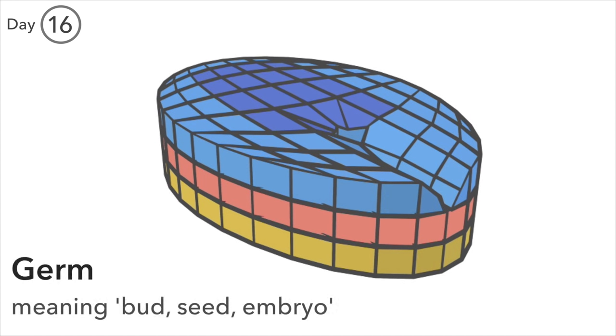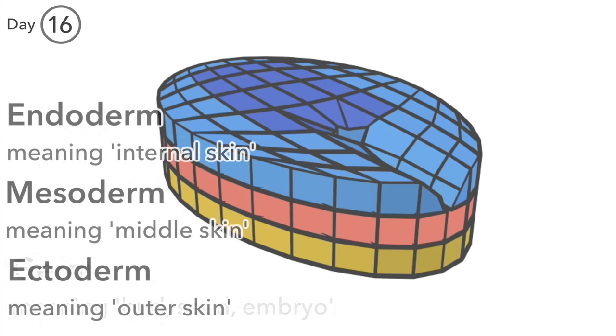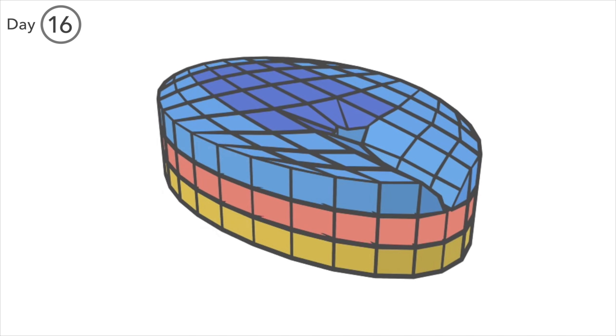The word germ literally means bud, seed, or embryo. Endoderm means internal skin, mesoderm, middle skin, ectoderm, outer skin. The translation skin sort of makes sense given they are very thin layers to begin with. They look like individual skins.